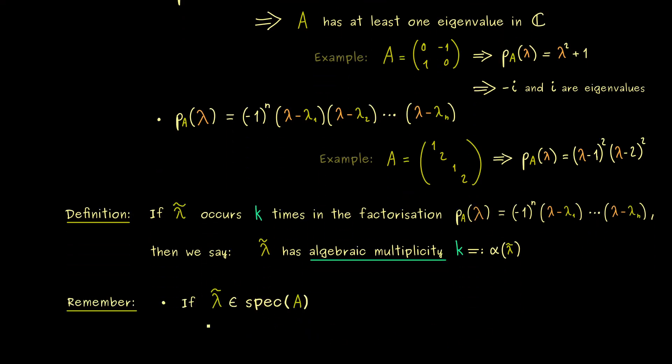First, if we already know that λ̃ is an eigenvalue of the matrix A, we can conclude that the algebraic multiplicity lies between 1 and n.